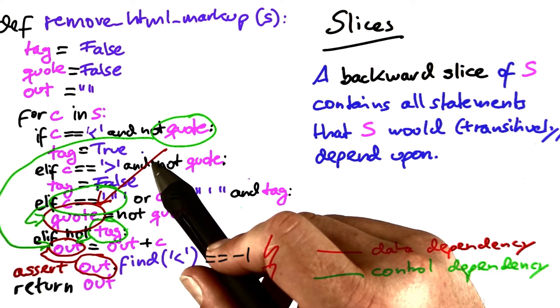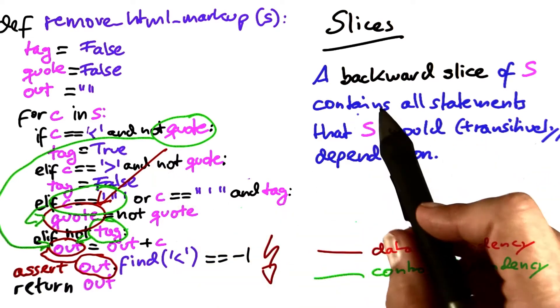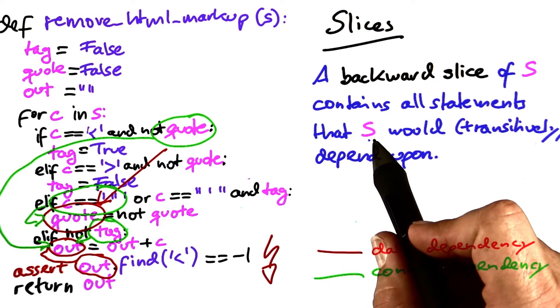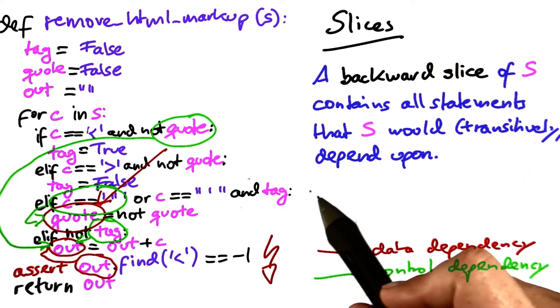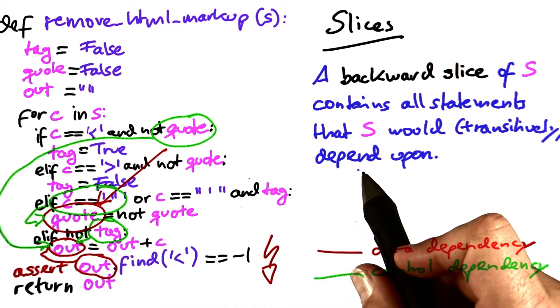The interesting thing about slices is that anything that's not in the slice cannot have influenced the state at the statement s or whether s is being executed or not. Therefore, a slice can act as a filter. Let me illustrate this by an example.